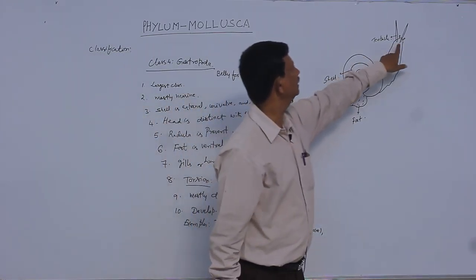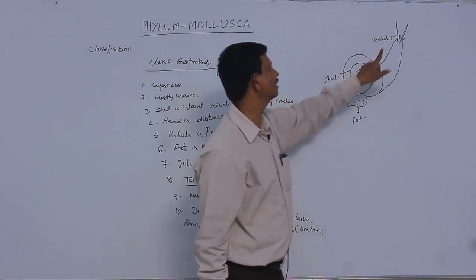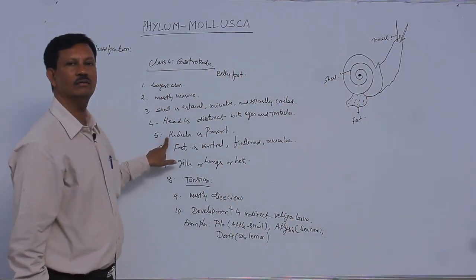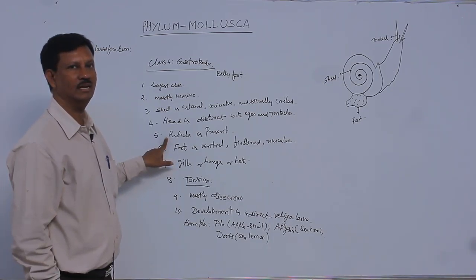In the head region, eyes are present, and sensory organs known as tentacles are also present. The radula, a rasping organ present in the buccal cavity, helps in digestion.